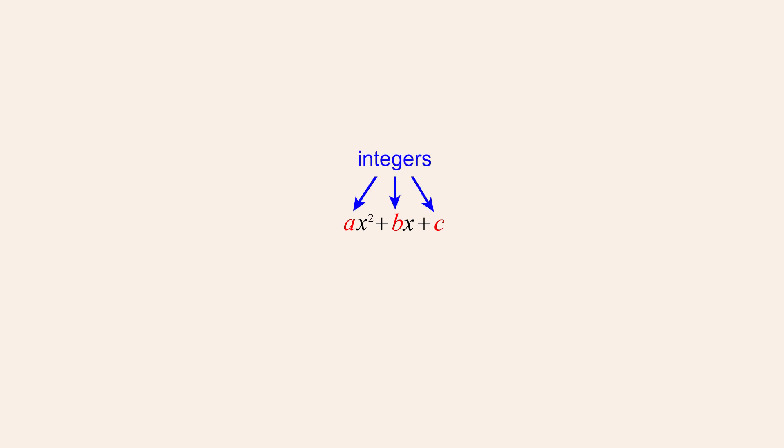If the x-squared coefficient a is not one, the first step is to look for any common factors of a, b, and c. In some cases, factoring out the greatest common factor can produce a quadratic expression with an x-squared coefficient of one.